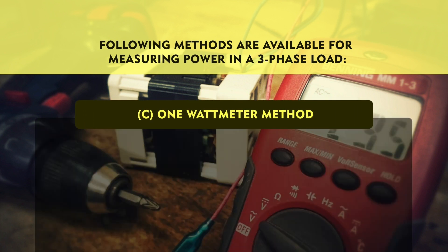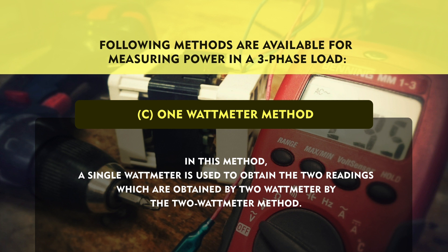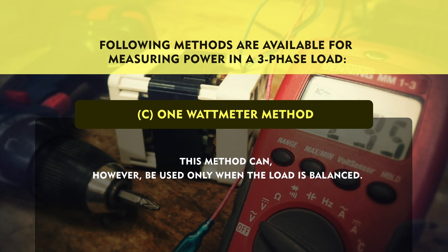The third method is the 1-wattmeter method. This method can be useful only when there is a balanced load. In this method, a single wattmeter is used to obtain the two readings which are obtained from the 2-wattmeter method. This method can however be used only when the load is balanced. Balance means that if you assume R-phase, Y-phase, and B-phase, the magnitude of the voltage on all three phases are equal and the phase difference between all three phases is equal, that is 120 degrees. In the case of balanced load, only the one-wattmeter method can be used.